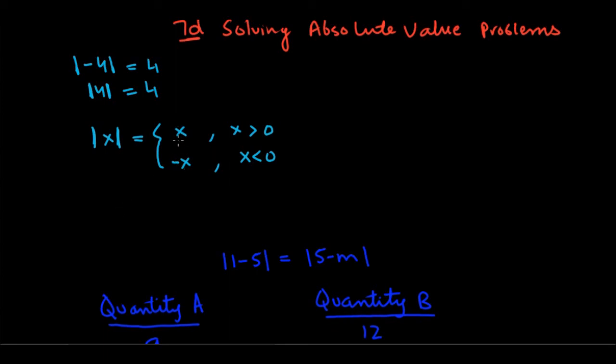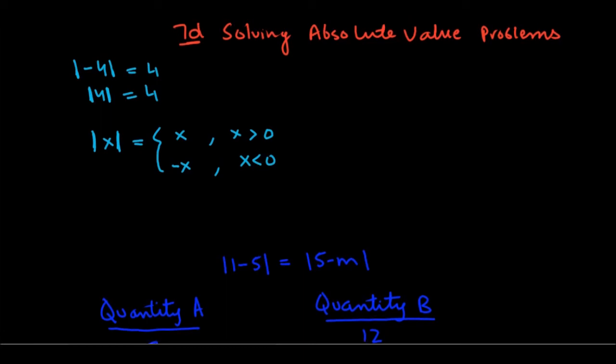So these are the two scenarios when you have absolute values: either your absolute value of x is just equal to x if x is positive, or it's equal to negative of the x if x is less than 0. This is very important, this will come very handy, this concept when you are doing GRE problems with absolute values.